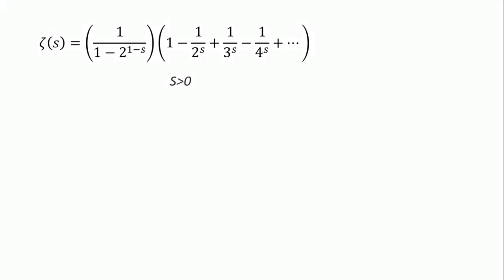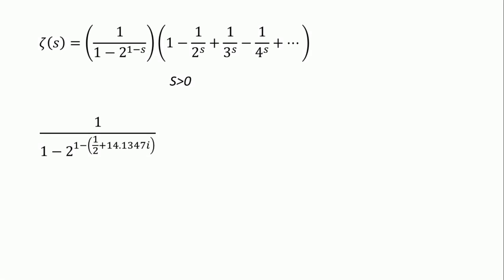How do we calculate the zeros of the zeta function? Assuming the domain is s greater than 0, this function has two brackets. If the product of these two brackets is 0, then one or both must equal 0. Starting with the left bracket: we need a value of s that results in 0, such as s = one-half plus 14.1i — the first zero of the zeta function. Substituting this into the left bracket does not give zero, implying the left bracket is not responsible for the zeros, meaning the right bracket must result in 0.